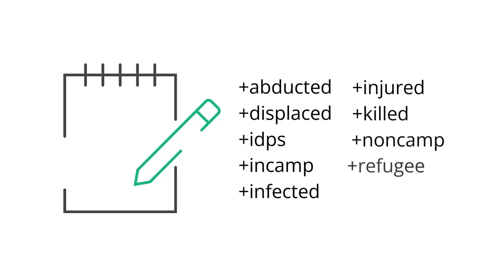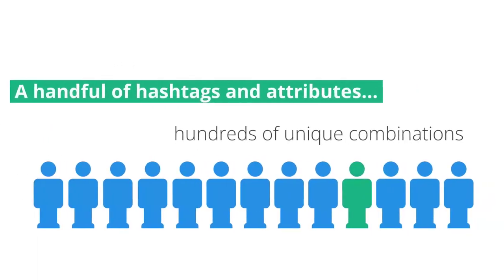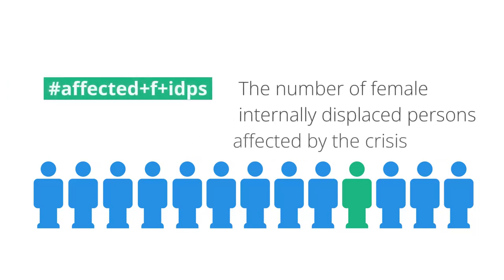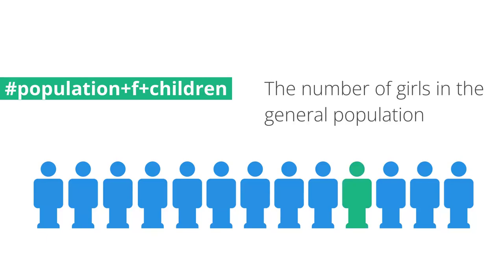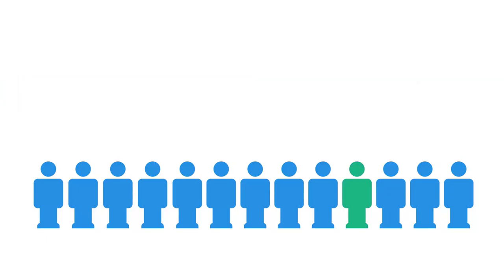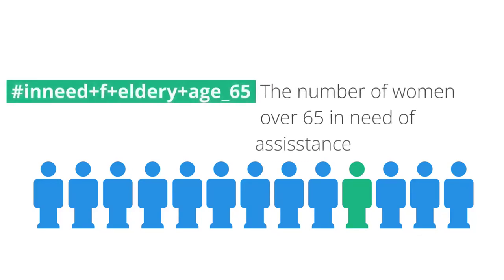Finally, there are a handful of attributes used to specify different kinds of impacts, which can distinguish between groups. Examples include +IDPs for people who have been internally displaced, +incamp for those displaced into official camps, and +injured for those injured as a result of the crisis. For instance: #affected+F+IDPs describes female internally displaced persons affected by the crisis; #population+F+children describes girls in the general population; #reached+refugee+elderly describes elderly refugees reached with assistance; and #inneed+F+elderly+age_65 describes women over the age of 65 in need of humanitarian assistance.